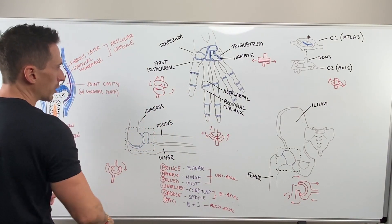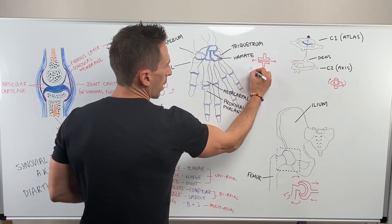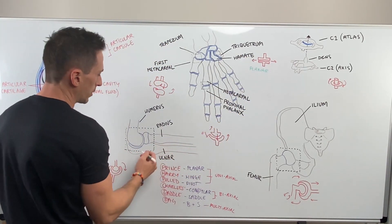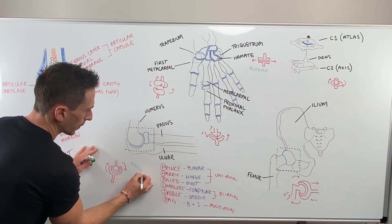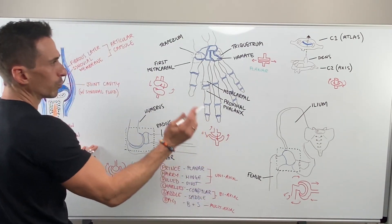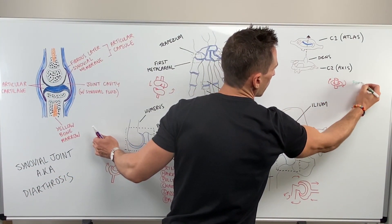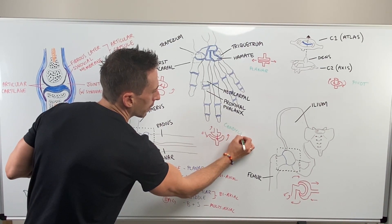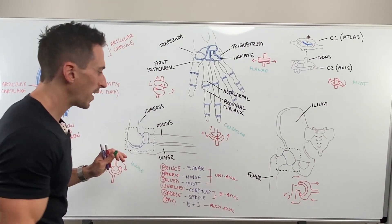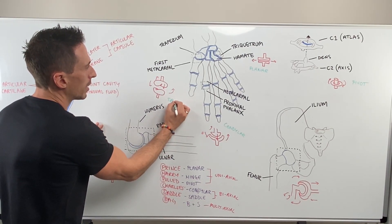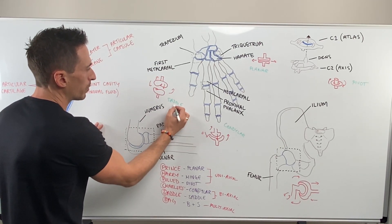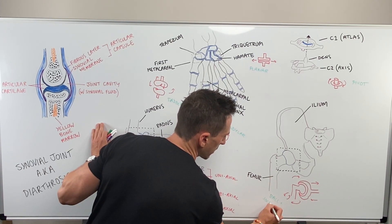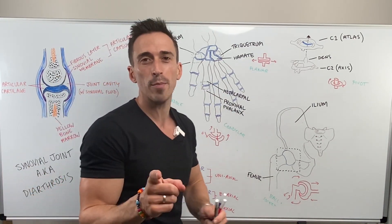Let's quickly label to finish off. We've got the planar joint at the triquetrum and the hamate, the hinge joint at the elbow, the pivot joint at C1 and C2, the condylar joint at the metacarpal and proximal phalanx, the saddle joint at the first metacarpal and the trapezium, and the ball and socket joint at the hip. These are the six different types of synovial joints that you need to remember.